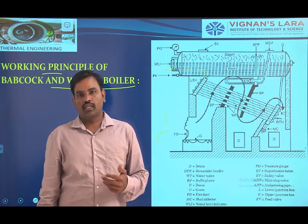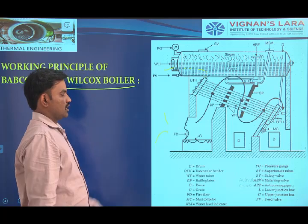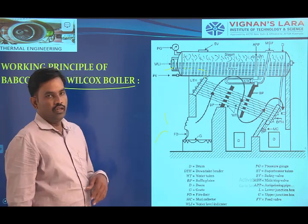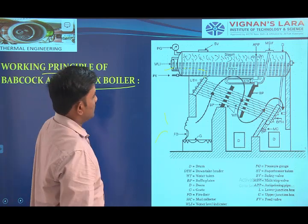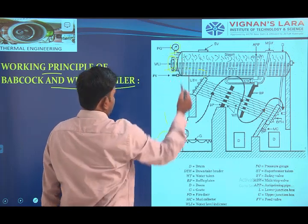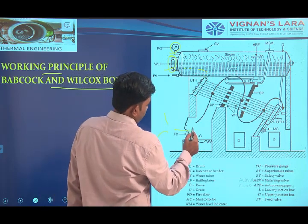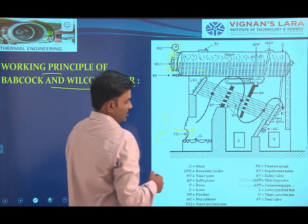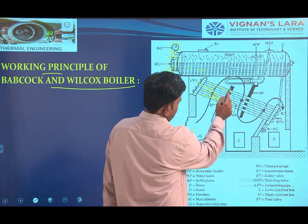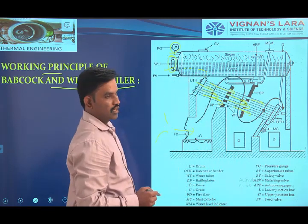It is a water tube boiler, natural circulation type. The hot flue gases are generated outside the furnace — that means it is an externally fired boiler. This type of boiler is also used in medium pressure applications. See the boiler mountings: this is the water level indicator, this is the pressure gauge, this is the boiler drum to accommodate the water. These are the different inclined tubes, arranged in order to flow the water from the upper header to the lower header.